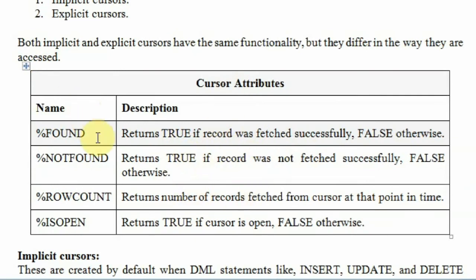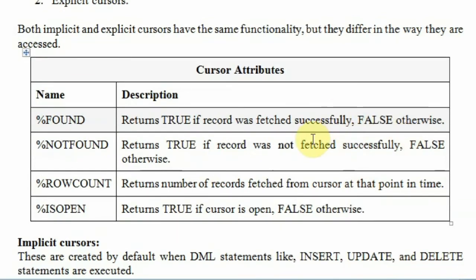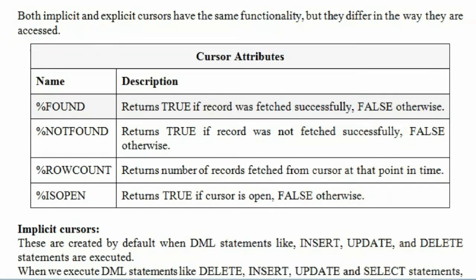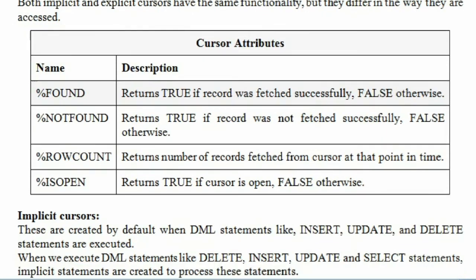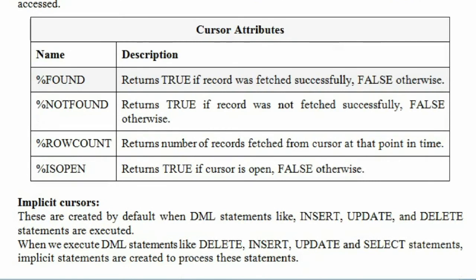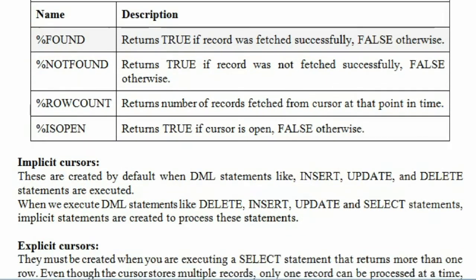%FOUND returns true if a row is found. %NOTFOUND returns true if a record is not found — it is the vice versa of %FOUND. %FOUND returns true if the record is fetched, else false. %NOTFOUND returns true if the fetch is not successful or the record is not fetched successfully, false otherwise. %ROWCOUNT returns the number of records fetched from the cursor at that point in time. %ISOPEN returns true if the cursor is open.